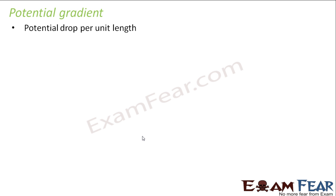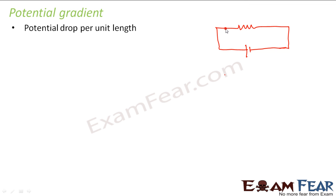Let us see what it is with the help of a circuit. Let us suppose we have a circuit with a cell and some resistance R. Let us consider two points A and B. We assume the potential at point A is greater than the potential at point B. Due to the difference in potential there is a flow of current. As we move from point A to point B, the potential keeps decreasing. This decrease in potential along the length of the circuit is known as potential gradient.